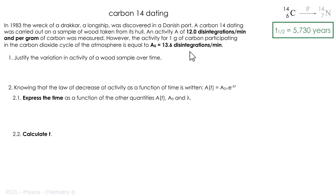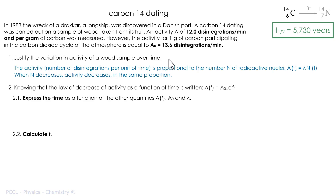Between the time the wood was cut and the time the activity measurement was made, the activity decreased. We can use N or A; I purposely chose an example with A so that you are comfortable. We treat subjects in the same way. To justify the variation in activity: the activity is proportional to the number N of nuclei, so A(t) = λ·N(t). Therefore, when one decreases, the other also decreases in the same proportion. This is why the activity of a sample decreases.